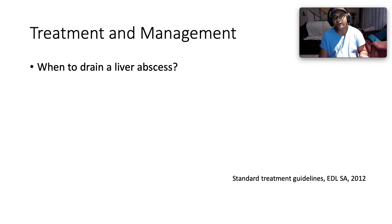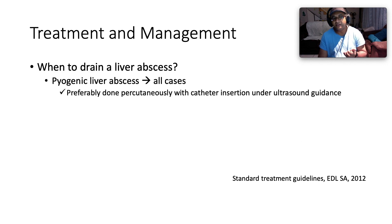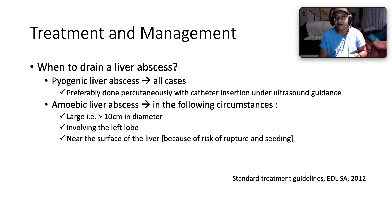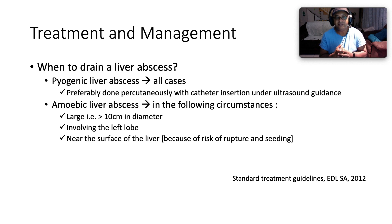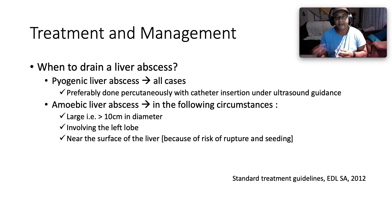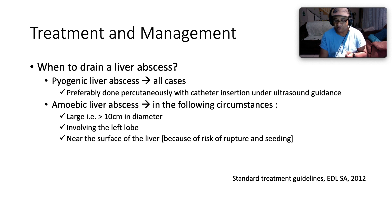When should you drain a liver abscess? For pyogenic liver abscess, all cases should ideally be drained — preferably percutaneously with catheter or drain insertion under ultrasound guidance. For amoebic liver abscess, drainage is indicated in three circumstances: first, if it is a large abscess greater than 10 cm in diameter; second, if it involves the left lobe of the liver; third, if it is near the surface of the liver because of the risk of rupture and seeding.